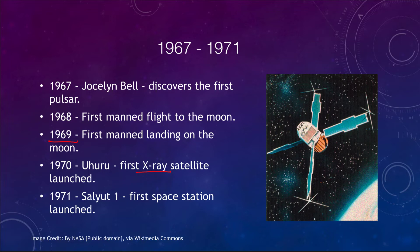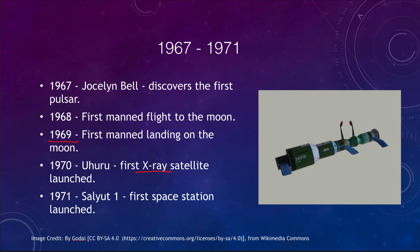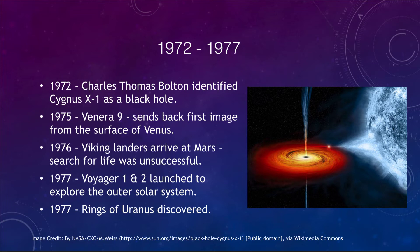In the early 1970s, Salyut 1 — the first space station — was launched, a precursor to the International Space Station. In 1972, Charles Thomas Bolton identified Cygnus X-1 as a strong black hole candidate. Measurements based on the orbit of its companion star showed that the mass of the central object had to be too great to be anything but a black hole.